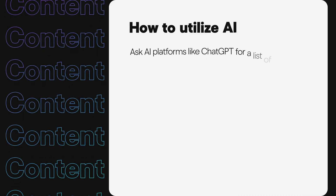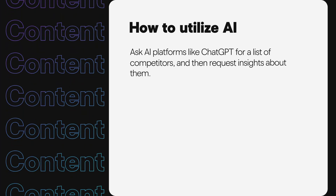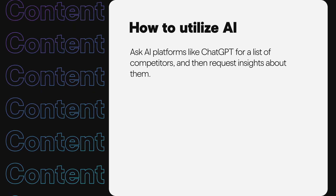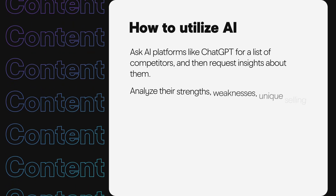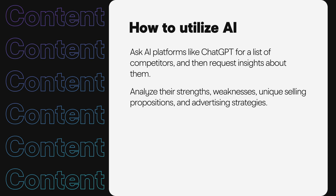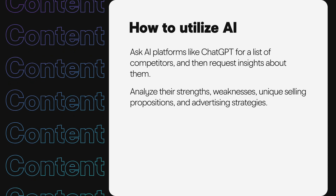Earlier, we talked about gaining insights from competitors about target audiences and keywords. AI can help you do this even if you don't know where to start. Ask AI platforms like ChatGPT for a list of competitors, and then request insights about them. Analyze their strengths, weaknesses, unique selling propositions, and advertising strategies.